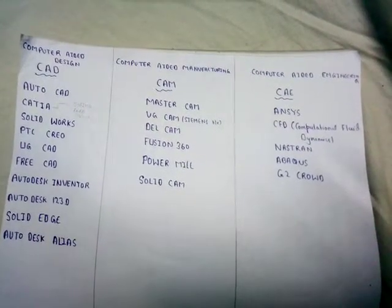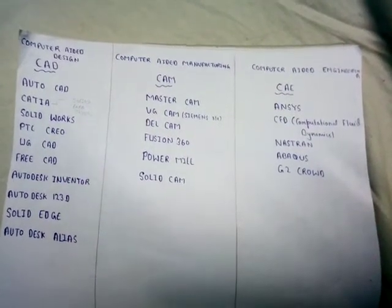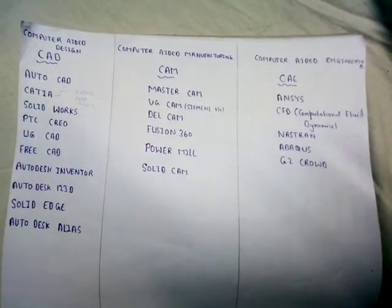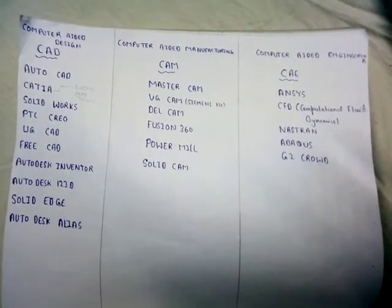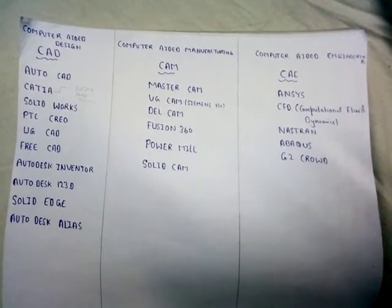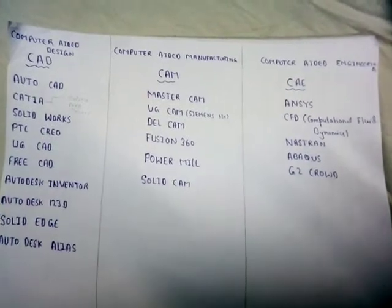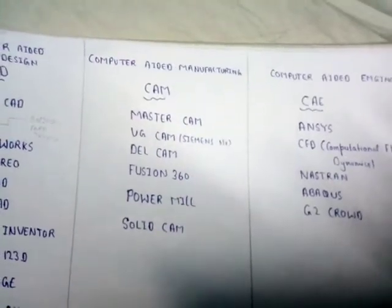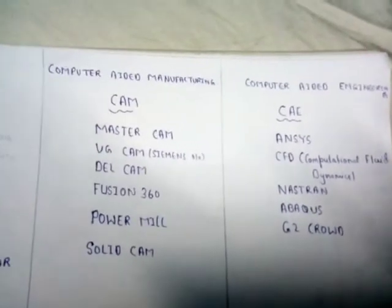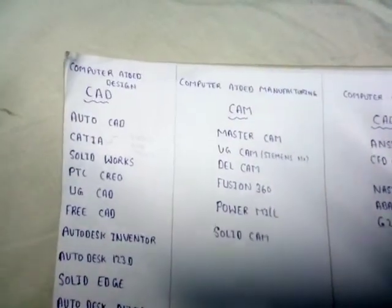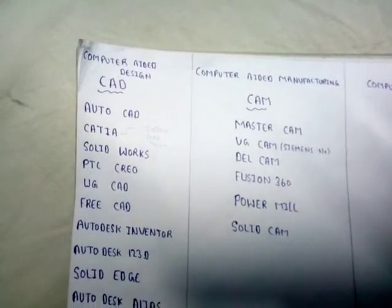Hi friends, I'm Balaji and today I'm going to explain the basic differences between CAD, CAM, and CAE. CAD is nothing but computer-aided design, CAM is nothing but computer-aided manufacturing, whereas CAE is computer-aided engineering.